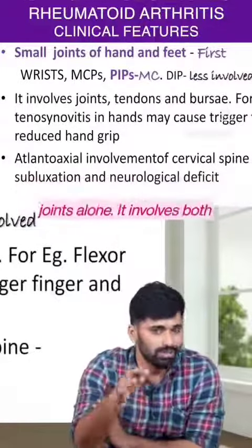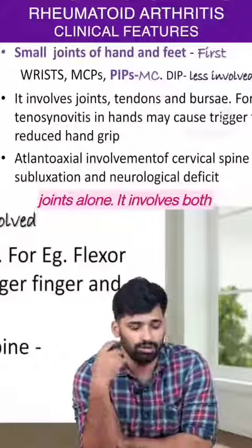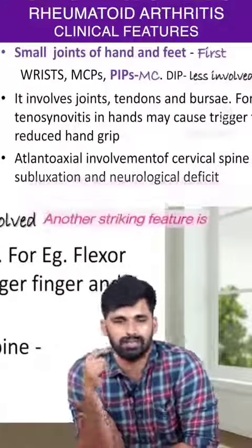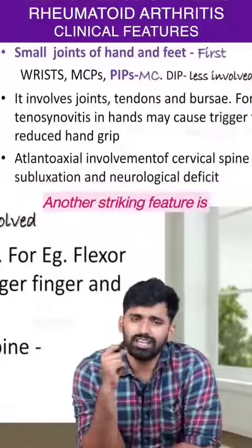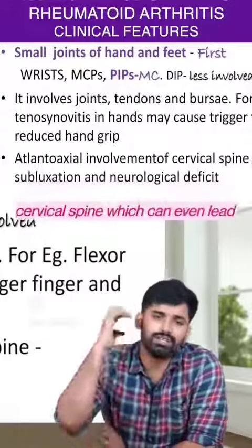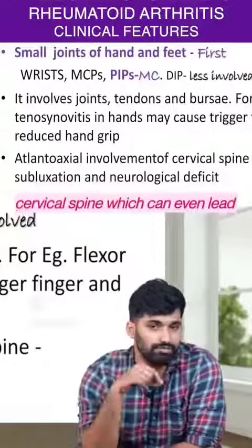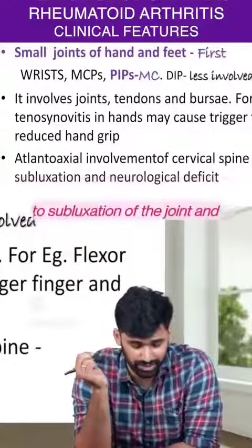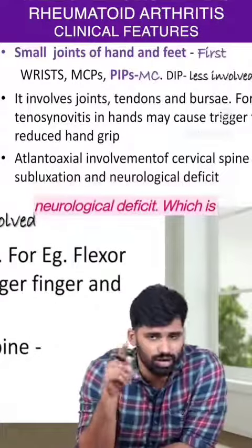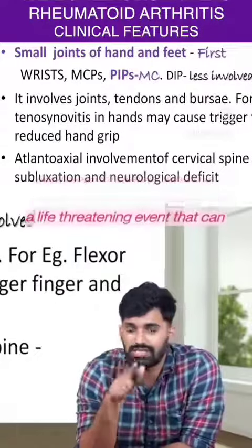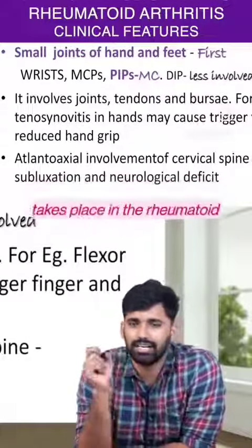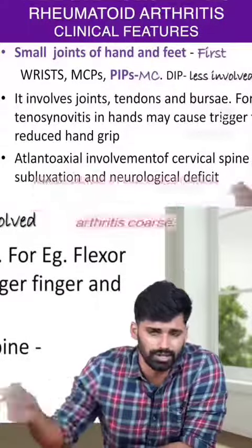It does not involve the joints alone — it involves both the joints, tendons, and the bursae. Another striking feature is atlantoaxial involvement of the cervical spine, which can even lead to subluxation of the atlantoaxial joint and neurological deficit — a life-threatening event that can take place in the course of rheumatoid arthritis.